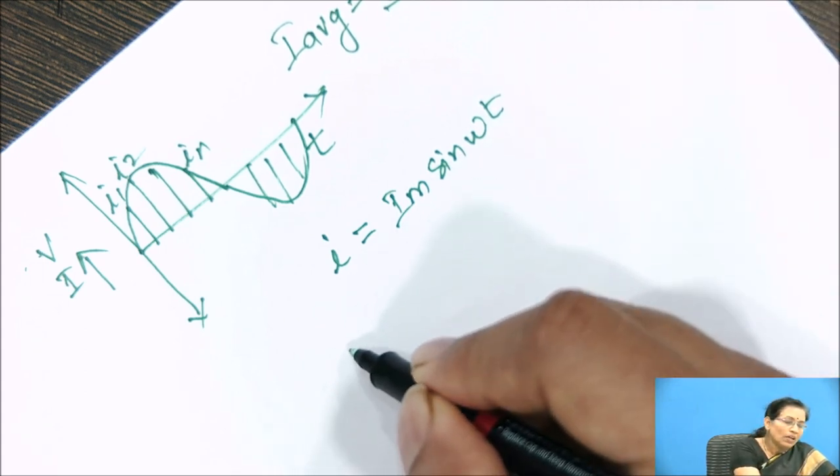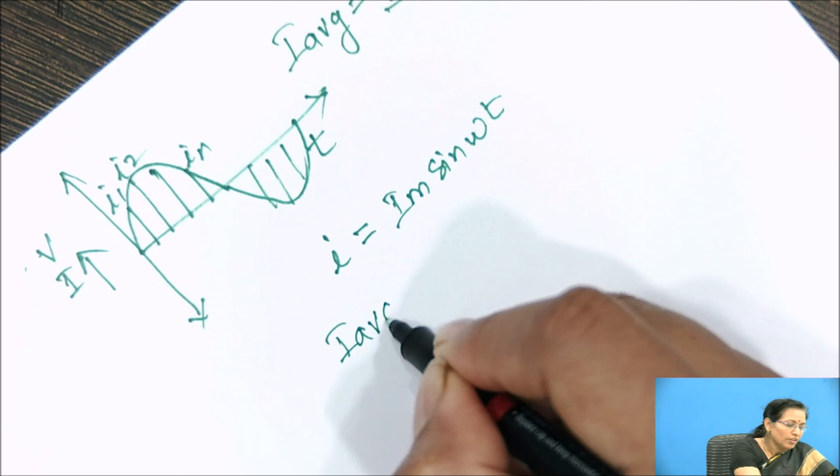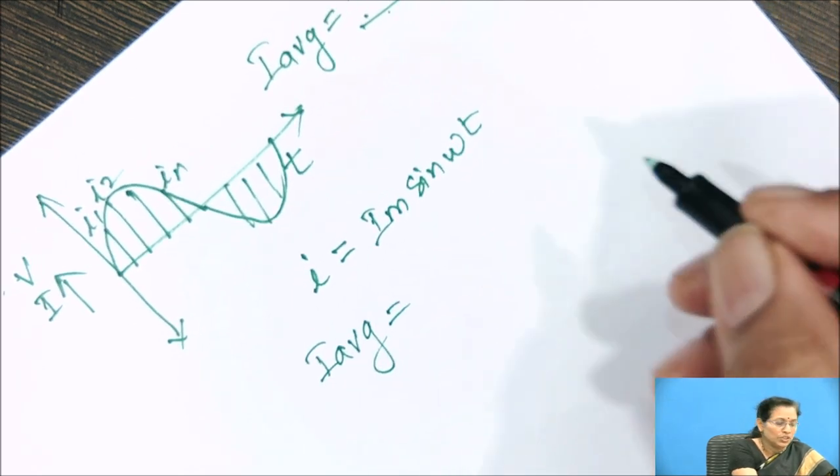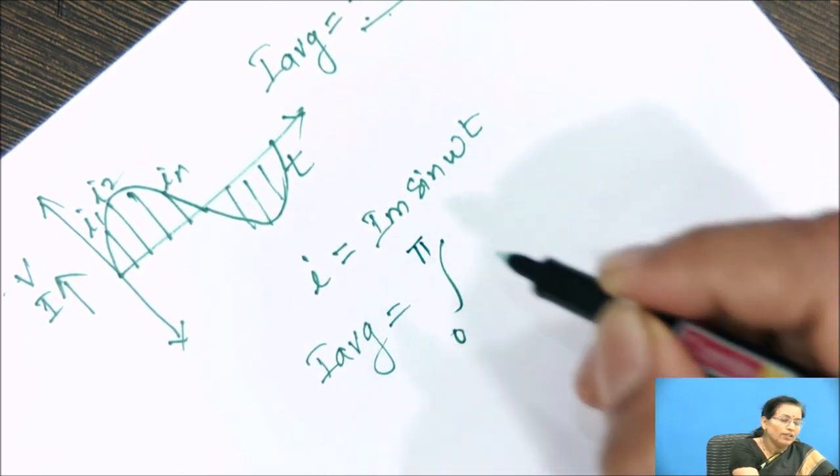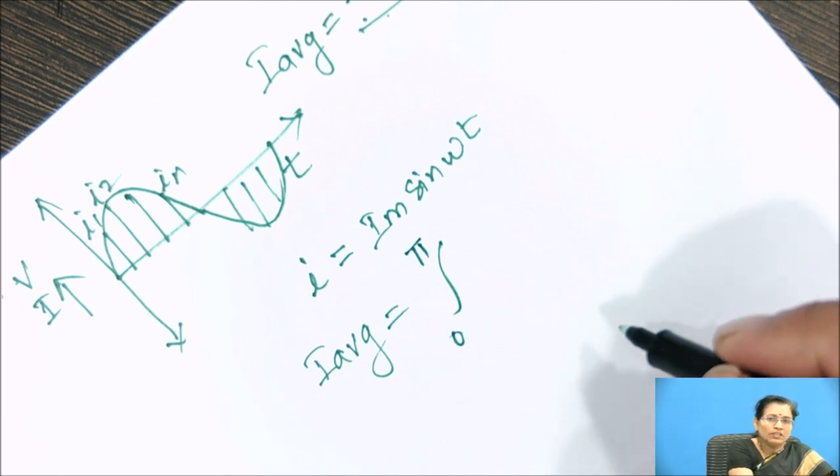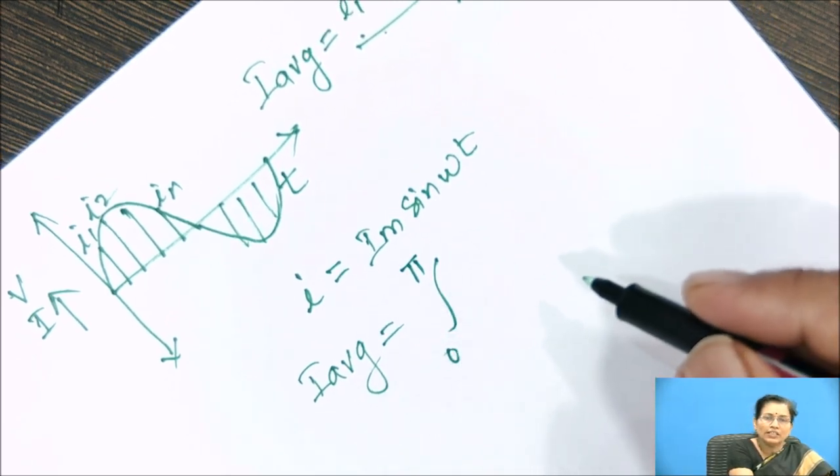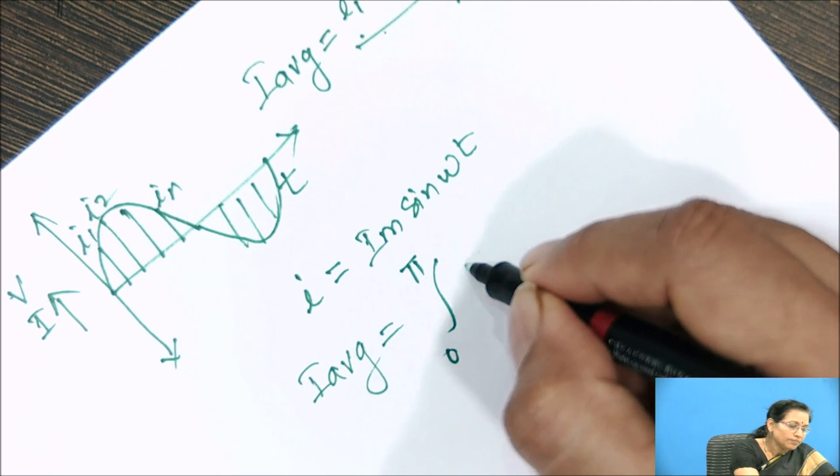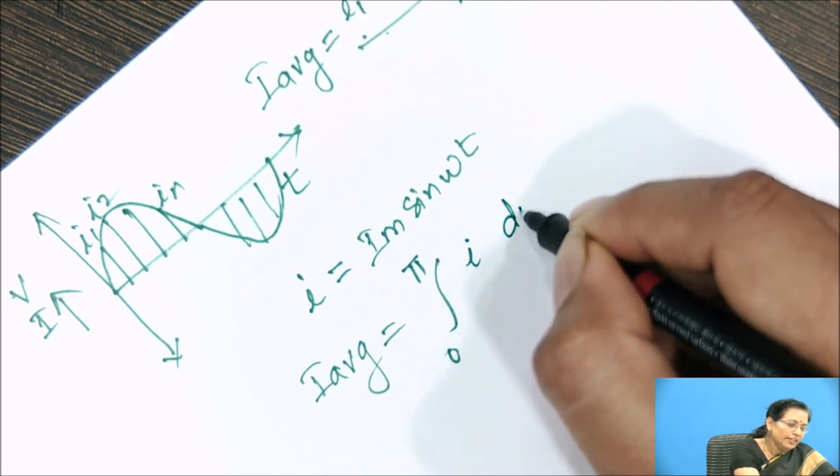So I average according to definition 0 to pi. Here we are going to calculate the average value for only half cycle, 0 to pi, I d omega t.